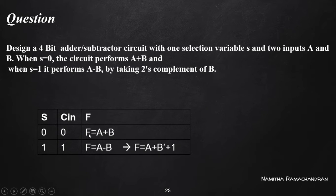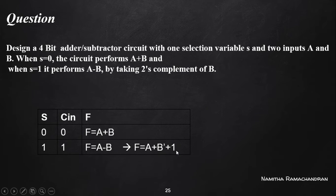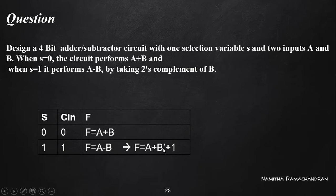Based on this information, for obtaining F equal to A plus B, the C-in value must be 0 in order to get F equal to A plus B as the output of the parallel adder. Similarly, for F equal to A plus B-complement plus 1, the C-in must be 1 so the parallel adder performs the A plus B-complement plus 1 operation. We can fix the C-in value based on the two given operations.